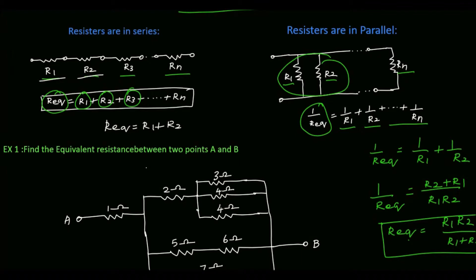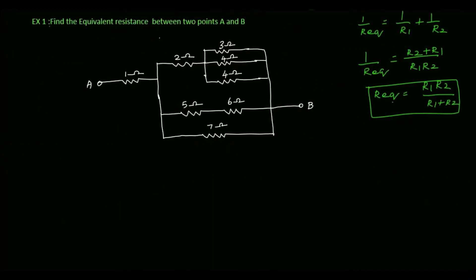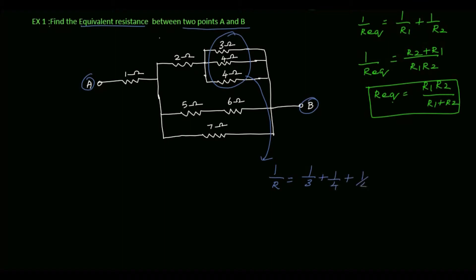Next, we will solve this problem. The problem is: find the equivalent resistance between two points A and B. If you see here, these three resistors are connected in parallel. So for this parallel connection, 1 by R is equal to 1 by 3 plus 1 by 4 plus 1 by 4.